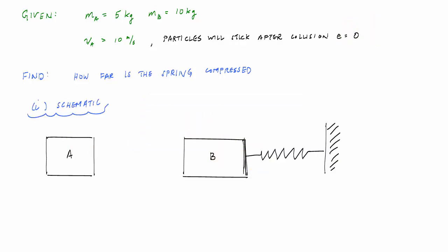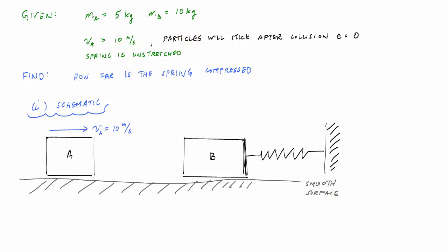And here's what the schematic looks like. The velocity of A just before impact is 10 meters per second. B is initially at rest. We'll say the ground here is frictionless, so we have a smooth surface, and the spring is initially uncompressed, is unstretched. It has a stiffness, maybe 9 kilonewtons per meter.